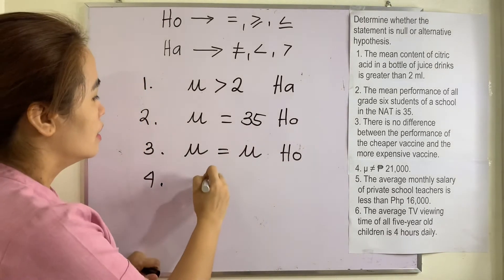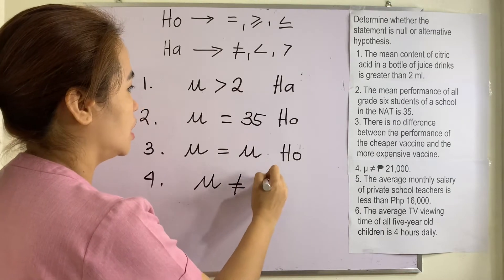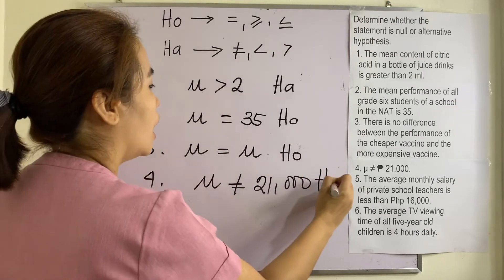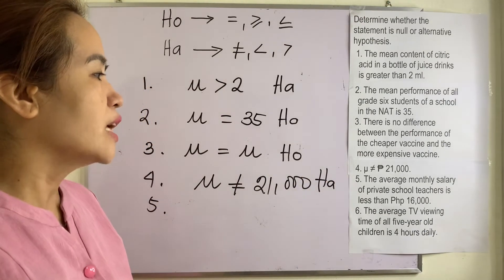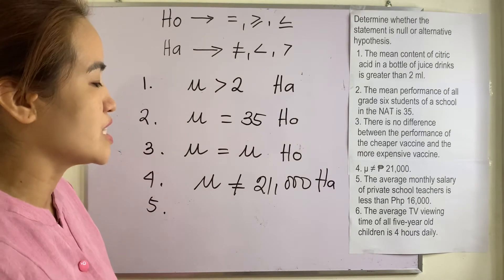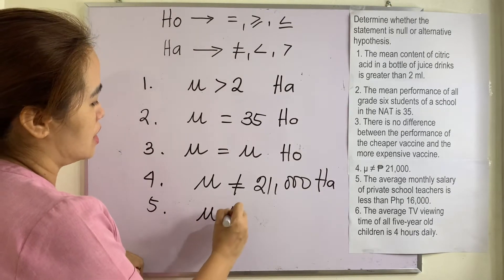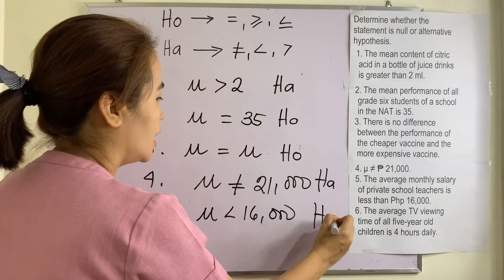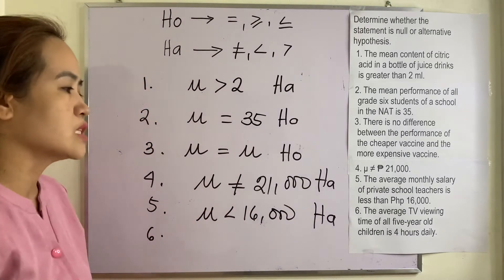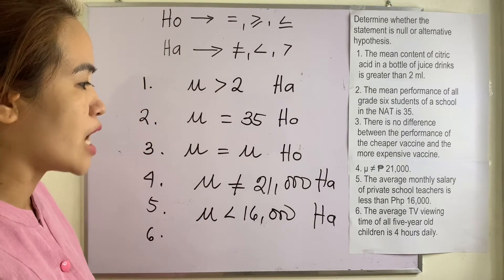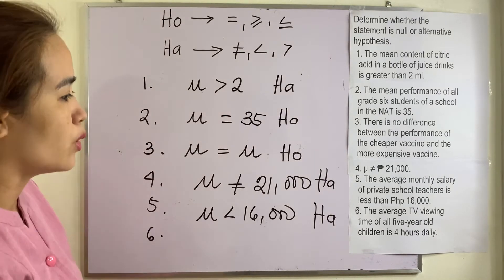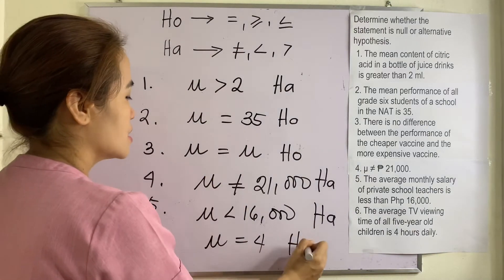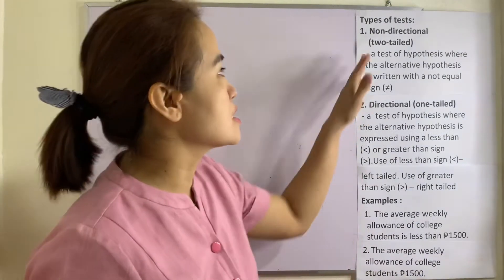Number four: the mean of the population is not equal to 21,000. It is obviously an alternative hypothesis. Number five: the average monthly salary of private school teachers is less than 16,000, which translates to less than 16,000, so it is an alternative hypothesis. Number six: the average TV viewing time of all five-year-old children is four hours a day, which translates to equal to four, so that is a null hypothesis. We have two types of hypothesis testing.